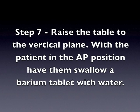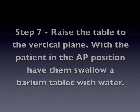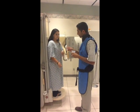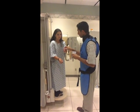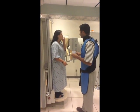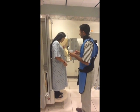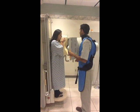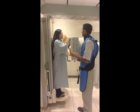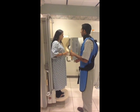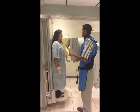Step 7: Raise the table to the vertical plane. With the patient in the AP position, have them swallow a barium tablet with water. Reassure the patient that the barium tablet does not contain any medication. After they have swallowed the tablet, fluoroscopy over the esophagus and GE junction to confirm passage of the tablet into the stomach.